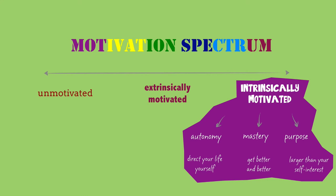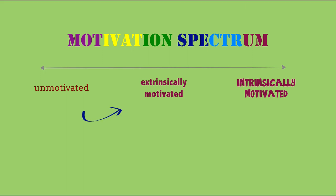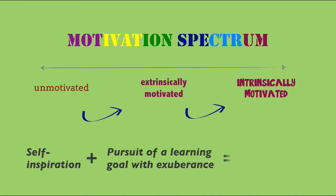For us humans, the desire to become more competent and gain mastery in a chosen domain is a big motivator. Think of a swimming world record holder still wanting to shave off a few milliseconds when she dives into the pool, even though she is already an Olympic gold medalist. Just being aware that your motivation is like a spectrum, and that intrinsic motivation is based on autonomy, mastery and purpose, helps you gradually move from being indifferent to a task to being intrinsically motivated to do it. Ability to inspire yourself to pursue a learning goal with exuberance, for the sheer joy of learning, is yearning to learn — and yearning to learn is an essential ingredient of self-directed learning.